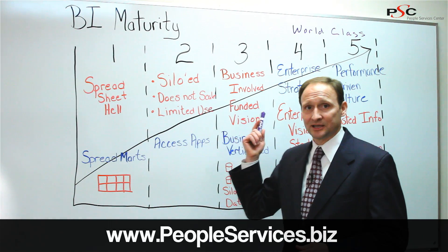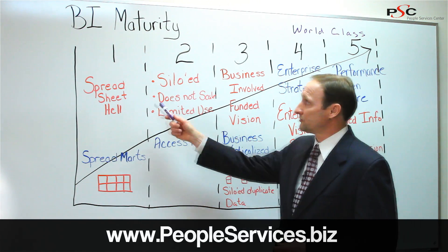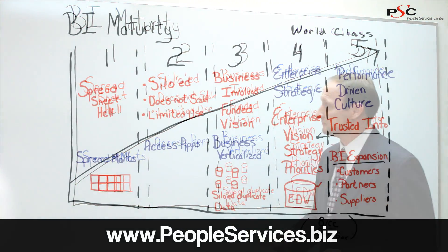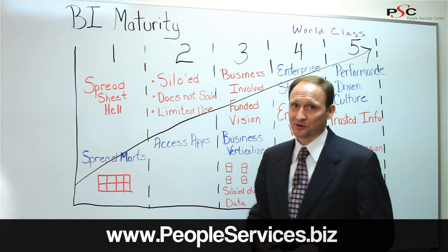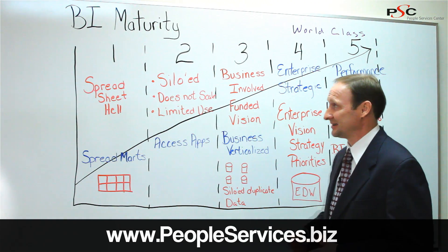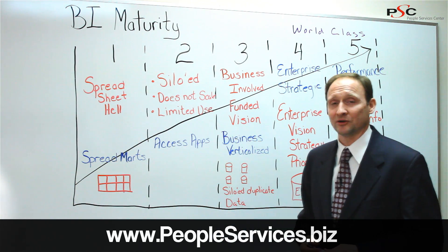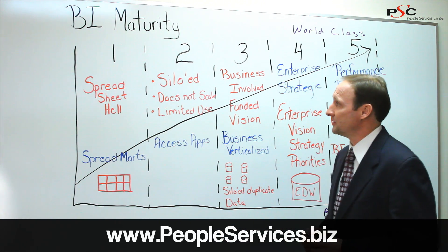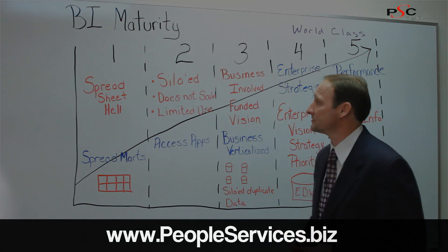These are the five stages of business intelligence maturity. The first stage is what we call spreadmarts, and really it's where organizations are in spreadsheet hell. They have a hundred spreadsheets and they're using them to manage their performance, numbers, and measures that they use to run the business.